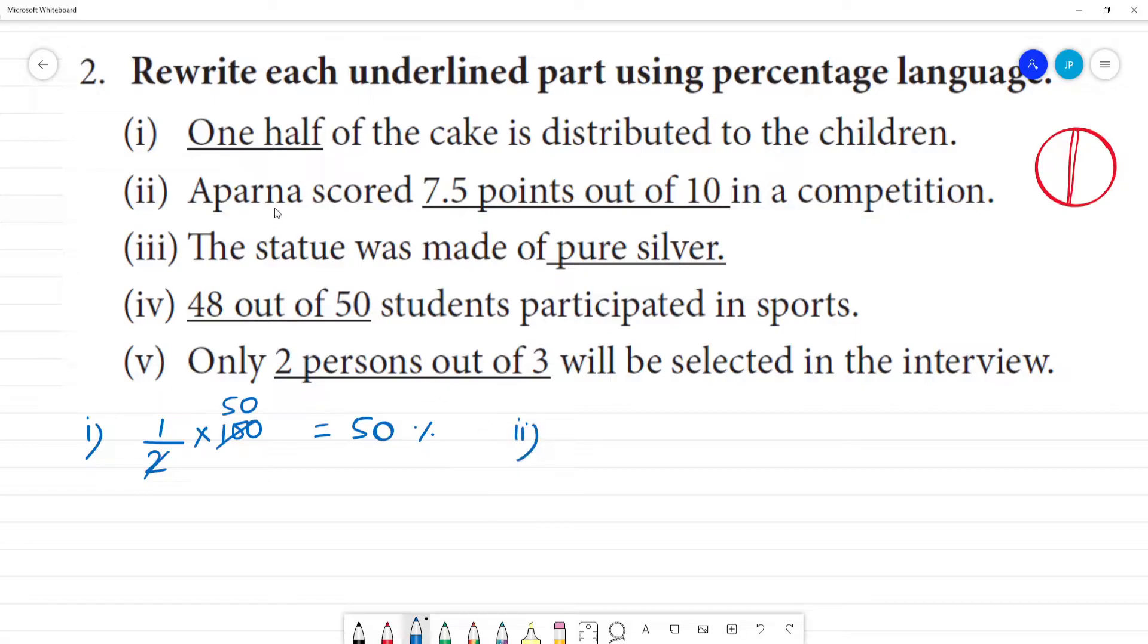Next is the second one. Aparna scored 7.5 points out of 10. So this fraction is 7.5 out of 10. To convert to percentage, multiply by 100. So this is 75 percent.